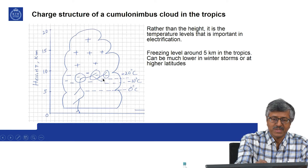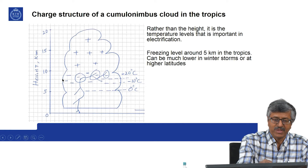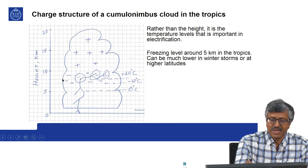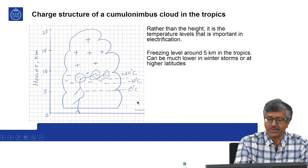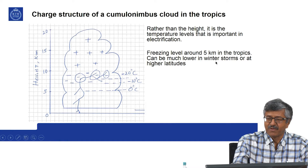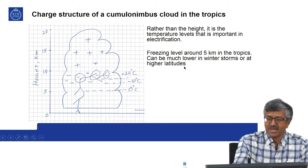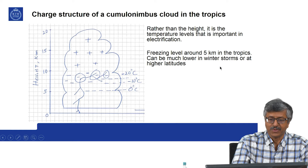This is a cloud in the tropics, and winter clouds in other places can be at a much lower altitude. The freezing level is around 5 kilometers in the tropics but can be much lower in winter storms or at higher latitudes. Lightning will have a horizontal portion and a vertical portion to its channel.